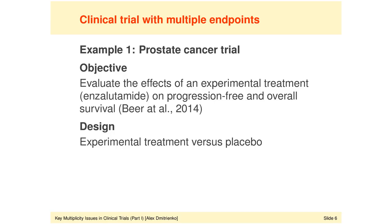Beginning with example one, this case study is based on a phase three trial recently conducted to study the effects of a novel treatment — the generic name is enzalutamide — in patients with metastatic castration-resistant prostate cancer in whom the disease progressed after chemotherapy. The trial's design is very straightforward: there is just a single dose or regimen of this experimental treatment versus placebo, which is in reality the best supportive care.